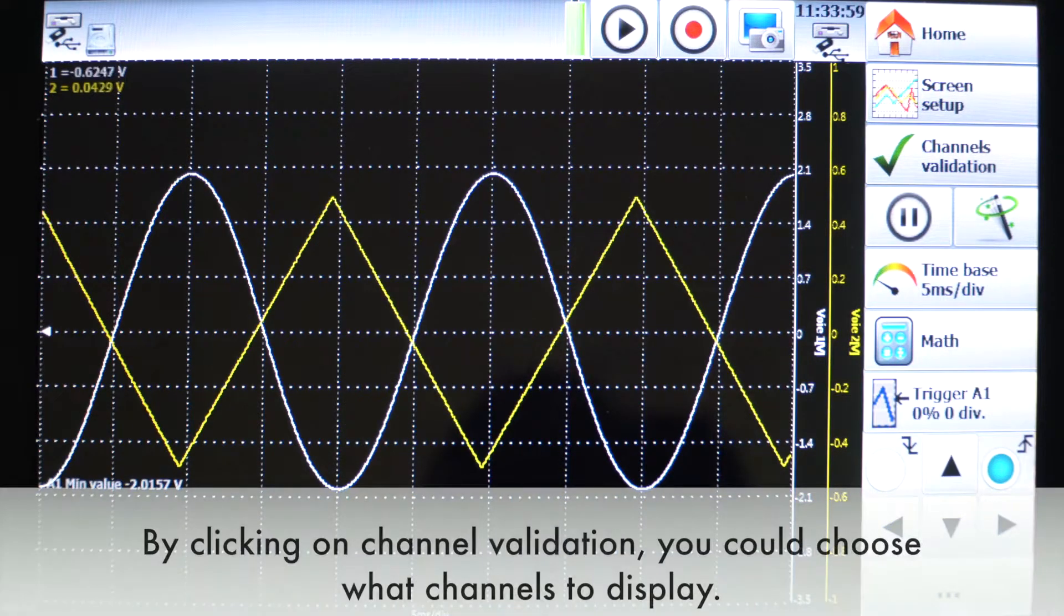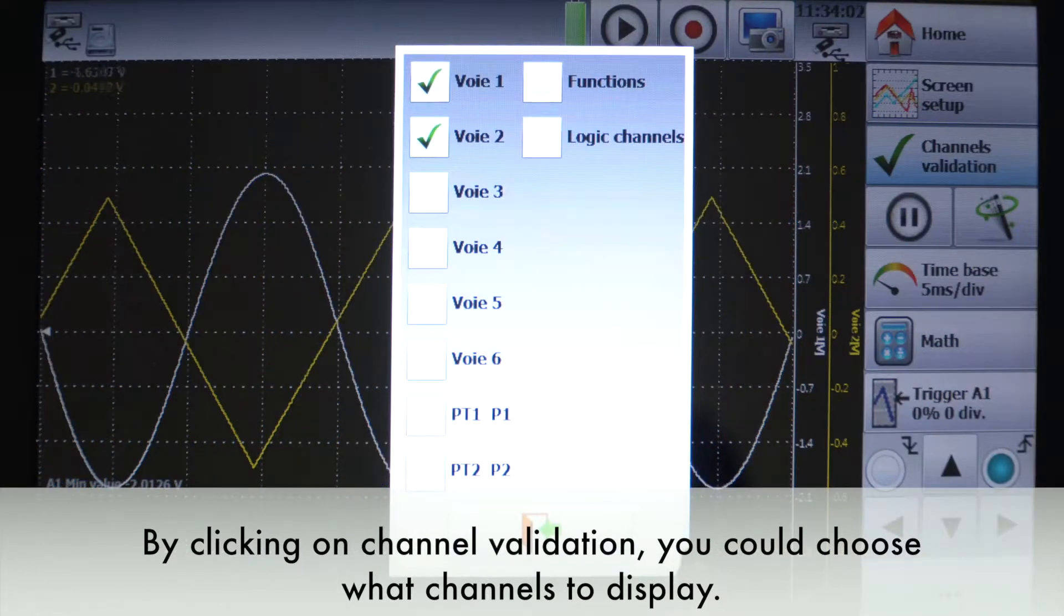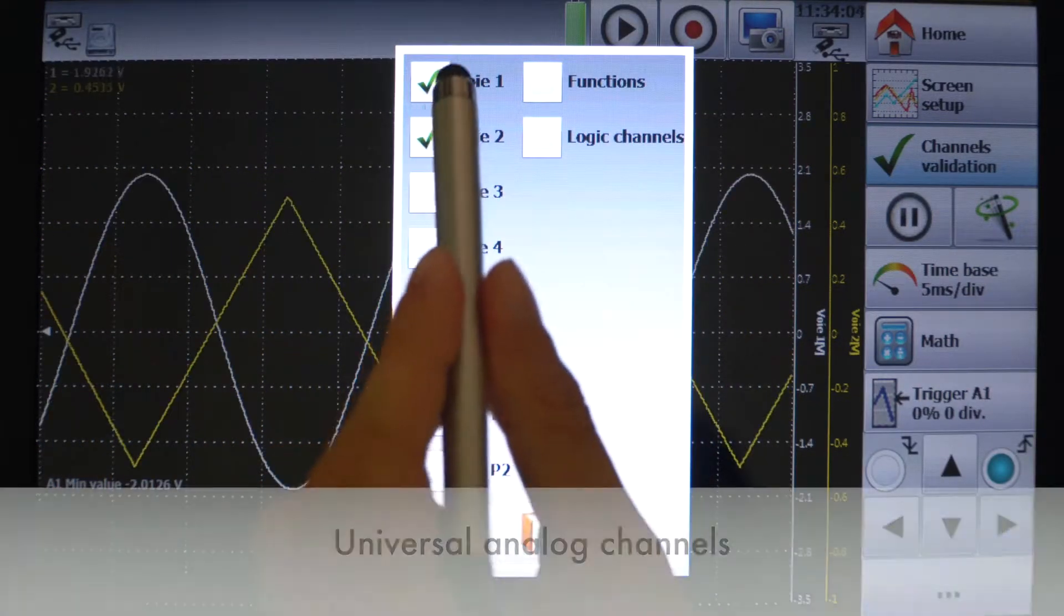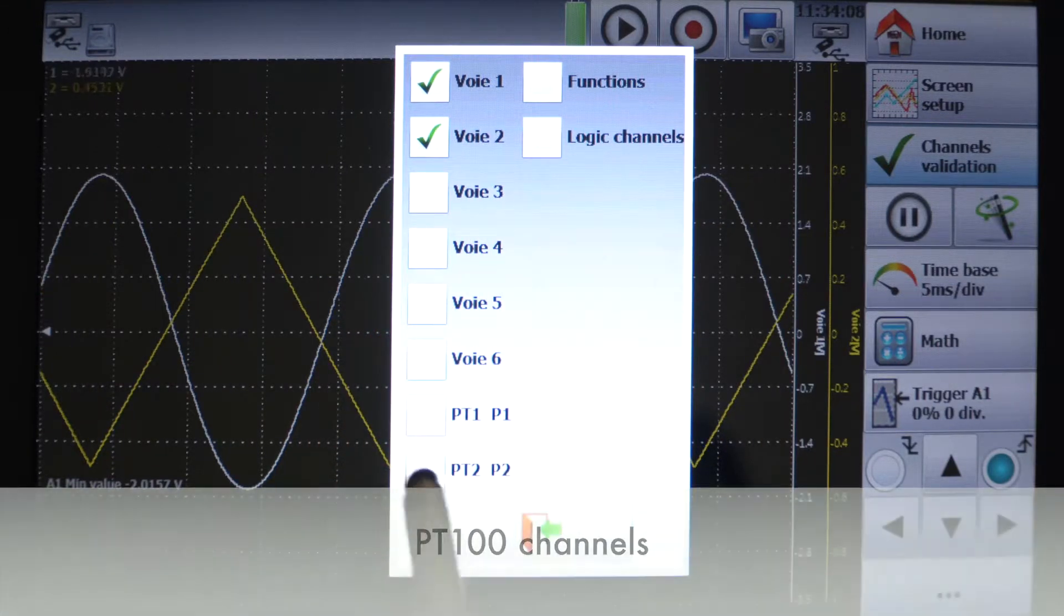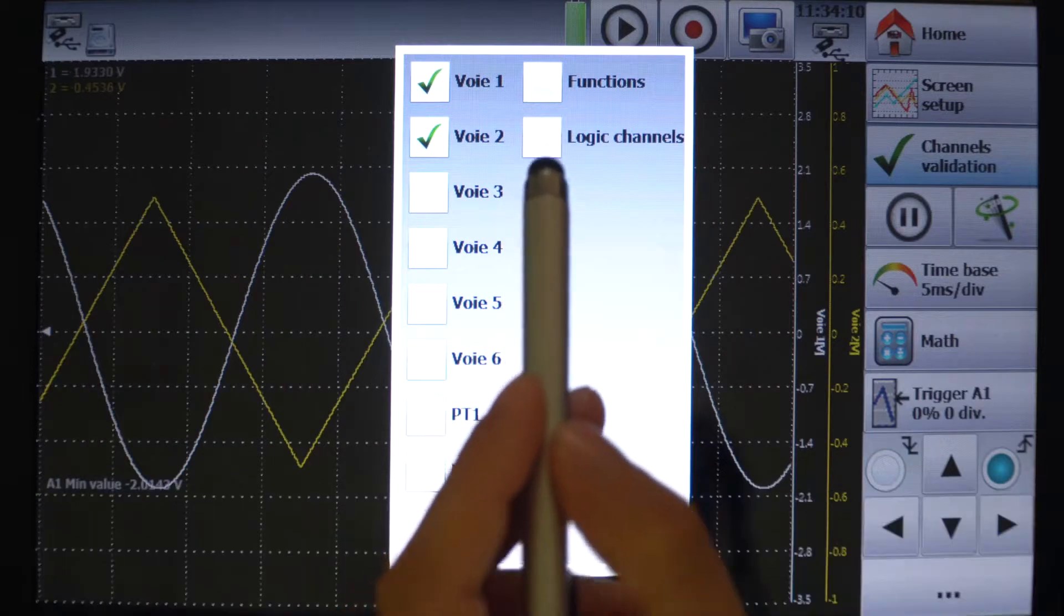By clicking on channel validation, you could choose what channels to display: universal analog channels, P200 channels, functions, and logic channels.